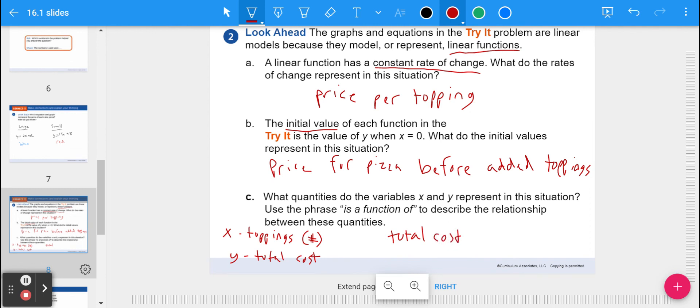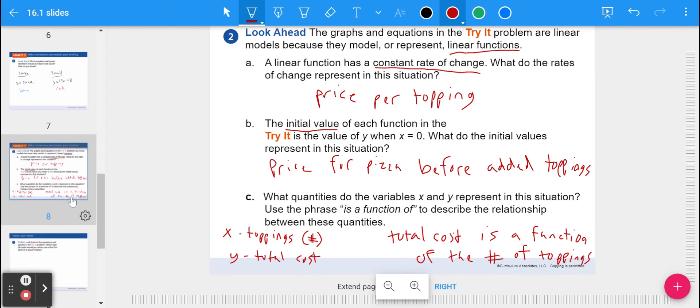The thing that depends is the total cost, which depends on the number of toppings. So total cost is a function of the number of toppings.